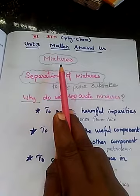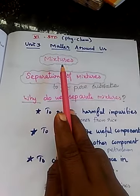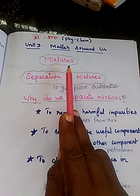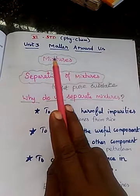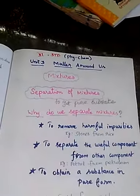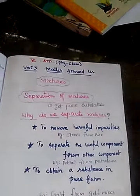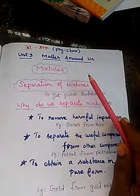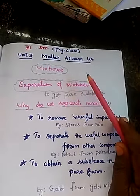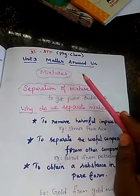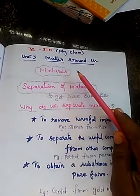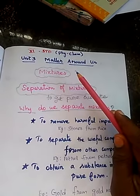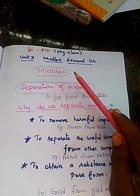In our previous class we discussed mixtures and examples of mixtures. What is a mixture? A mixture is a physical combination of two or more substances.